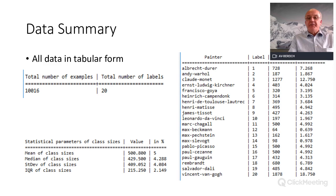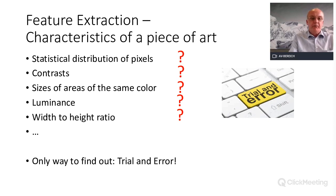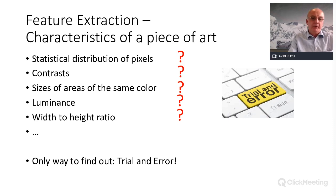Here's the data summary again showing the amount of images, labels, and percentages. Max Beckmann has only 0.64% of all images and Vincent van Gogh about 18.75%. My first approach was to think about what could be characteristic for the style of a painter — the statistical distribution of pixels, contrast, size of same-color areas, luminance, and width-to-height ratio.